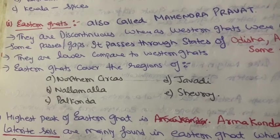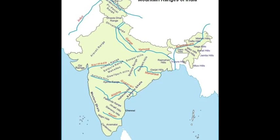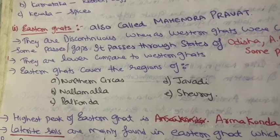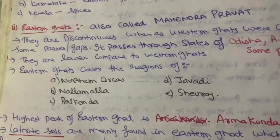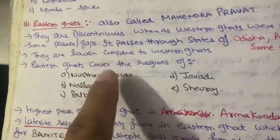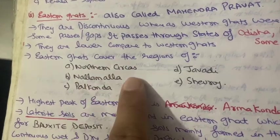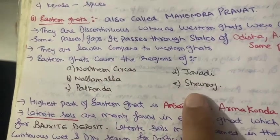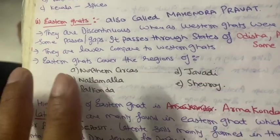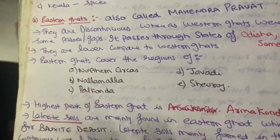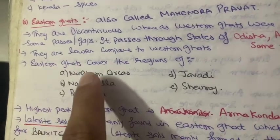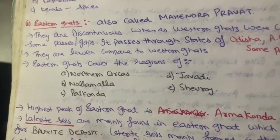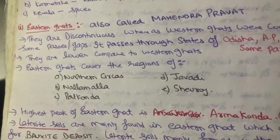To repeat: the five important regions are Northern Sirkas, Nallamala, Palkonda, Jawadi, and Chevrolet. Nallamala is a forest and it covers the states of Andhra Pradesh and Telangana. Northern Sirkas is on Odisha's side. I will make separate videos on each of these, but right now you should know these as the important parts of Eastern Ghats.